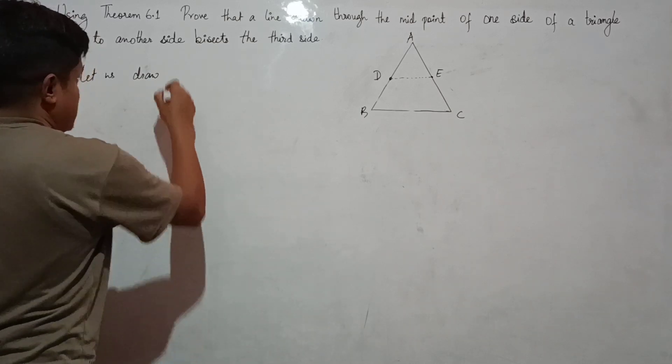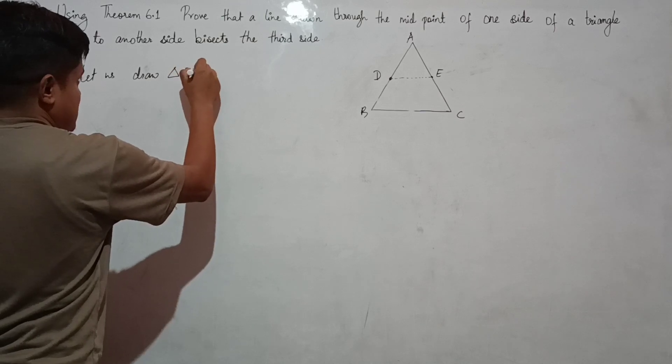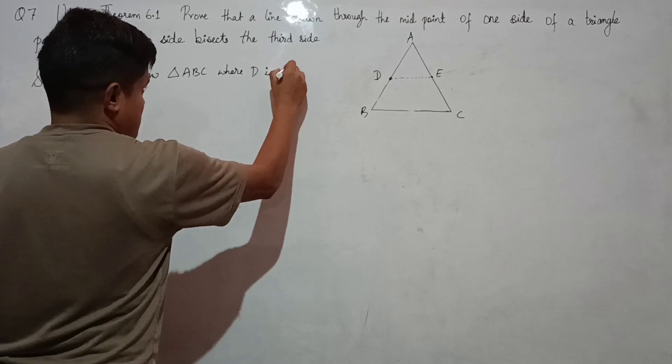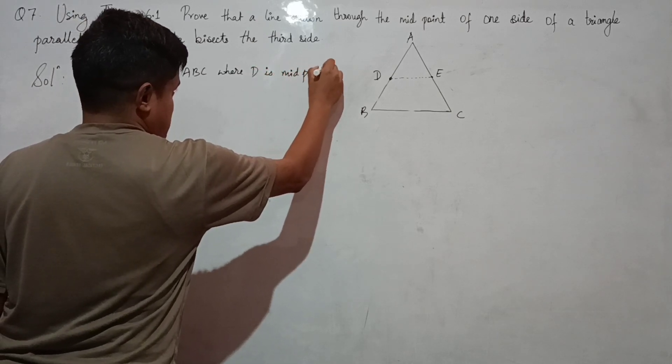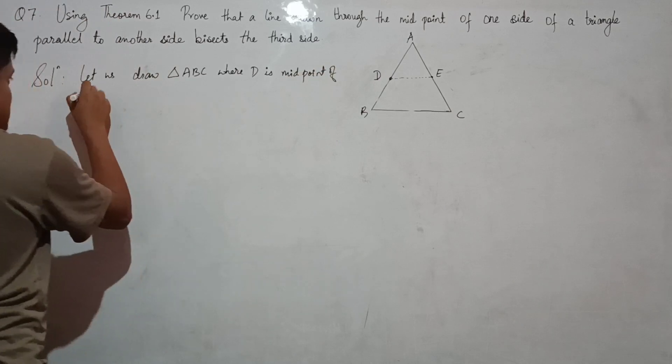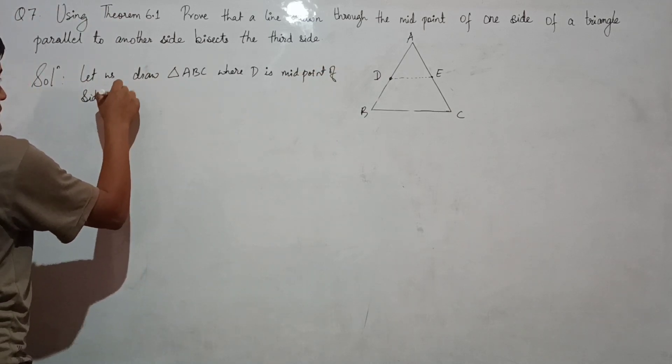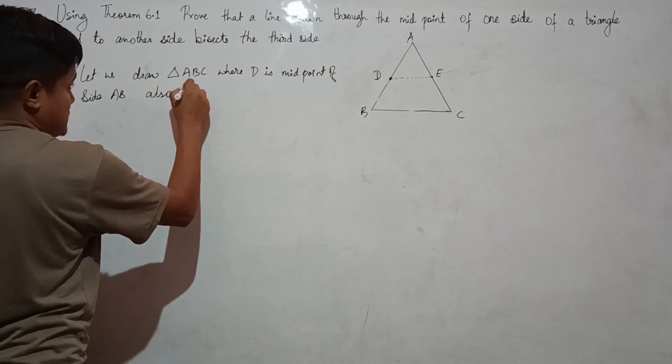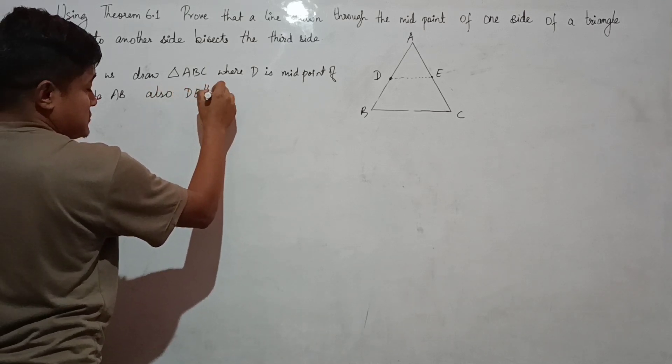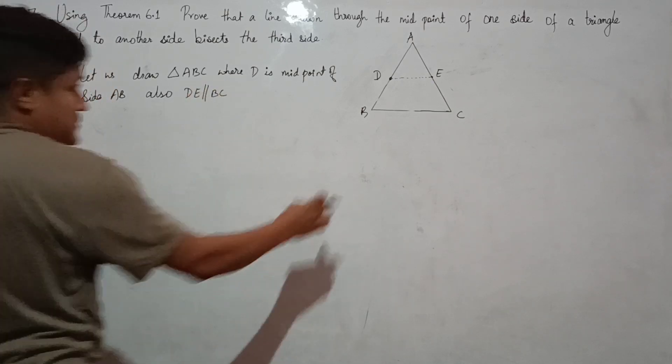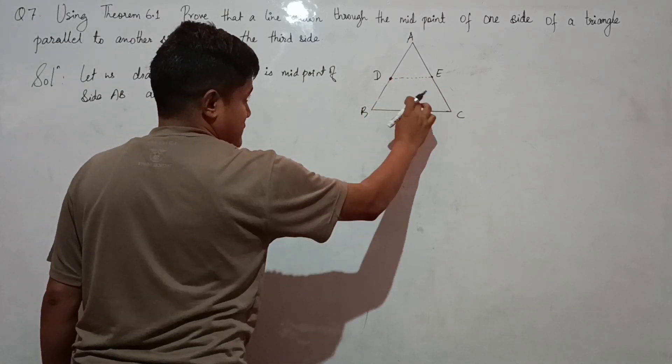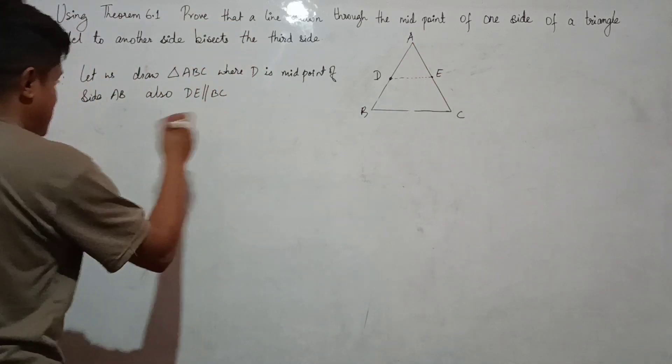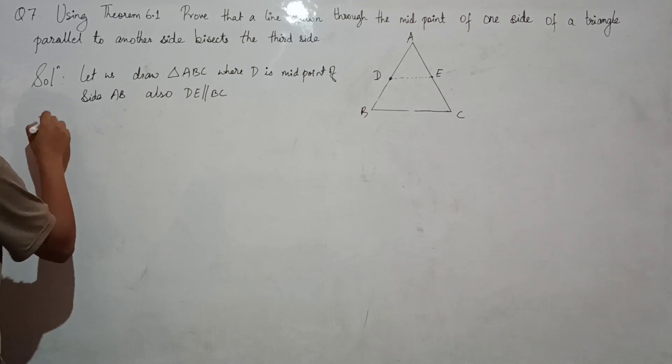Let us draw triangle ABC where D is midpoint of side AB. Also, DE is parallel to BC. Now the question says if D is the midpoint and the line is parallel, then AE equals to EC. This is what we have to prove.